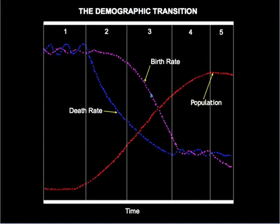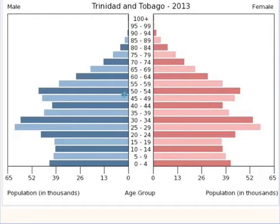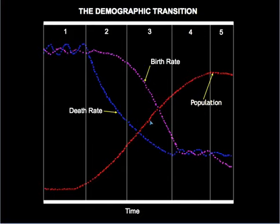Birth rates are now in steep decline and death rate continues to fall. Population is still on the increase and economic growth is happening. Most people of childbearing age are seeing the wisdom in having small families as the demographic transition continues to take effect, and this country begins to move into MEDC status.